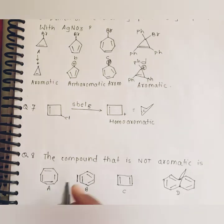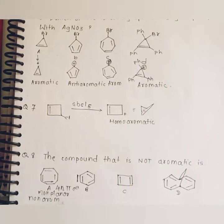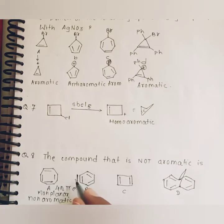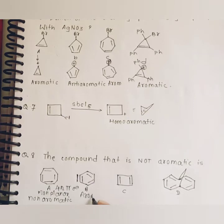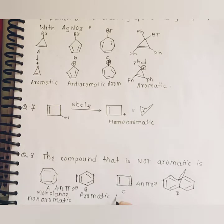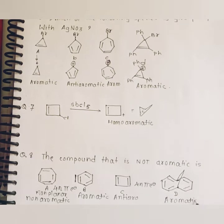Question eight: the compound that is not aromatic. In the first case, there are 8 pi electrons — it obeys the 4n pi electron rule. It is cyclic but non-planar, and therefore it is non-aromatic. If the compound were planar it would be anti-aromatic. In case of B, the external double bond is not counted, giving 6 pi electrons — therefore it is aromatic. In case of C, it obeys the 4n pi electron rule — therefore it is anti-aromatic. In case of D, there are 10 pi electrons; it is cyclic, planar, and conjugated — therefore it is again aromatic.